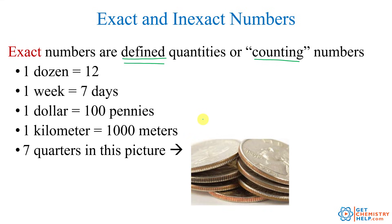Exact numbers can also be numbers that you obtain through counting. So you physically count 1, 2, 3, 4, 5, 6, 7 — we know there are exactly seven quarters. We're not guessing; we're actually defining how many quarters there are.